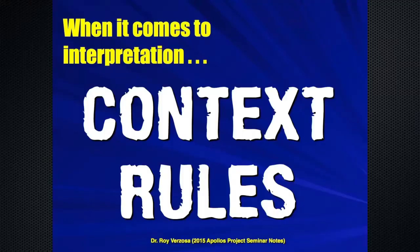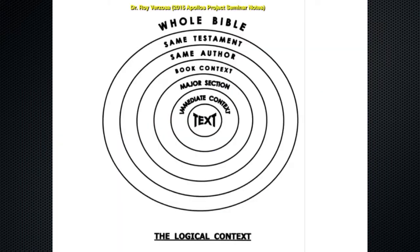We've given you what we call the logical context. You start with the text, and a lot of times we take a text out of its context and that's when it becomes a pretext. Then you look at the immediate context — the paragraph division in your Bibles. The paragraph divisions are not inspired, the verse divisions are not inspired, the paragraph titles are not inspired; they were added later. So you can disagree with the divisions, but scholars did this and they think that's the paragraph division. Then you go to the major section — the whole chapter — then the book context, same author, same testament, and then the whole Bible. We'll take this one by one.